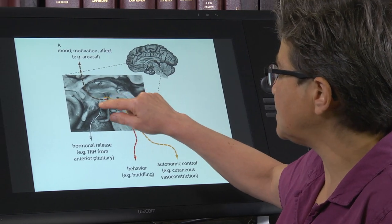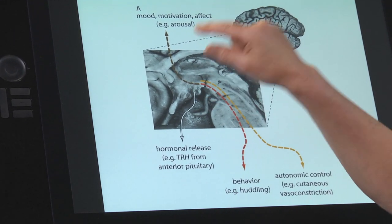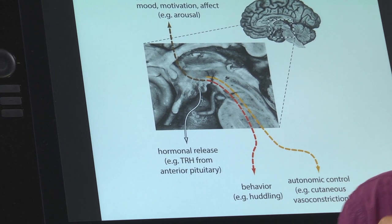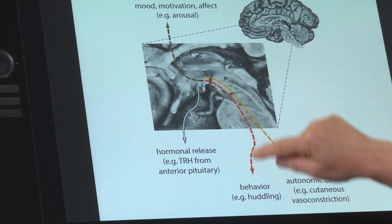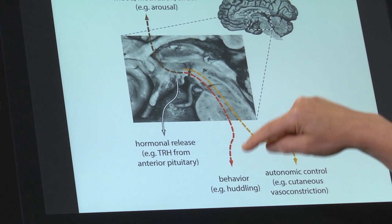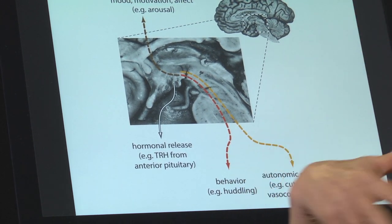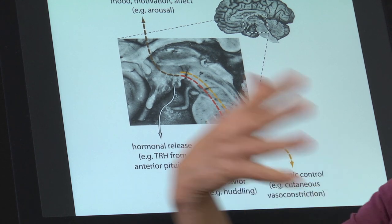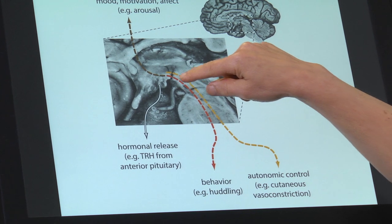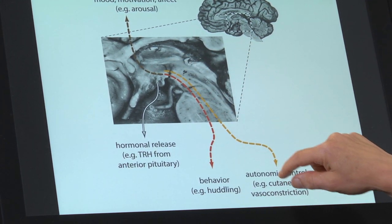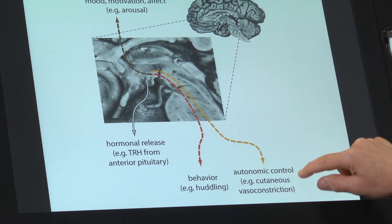That's the phylogenetically conserved purpose of the hypothalamus, but it is not the beauty of the hypothalamus. The beauty is that the hypothalamus also has connections down to the spinal cord and brainstem to motor outputs — to motor neurons or motor interneurons, neurons that then synapse themselves onto motor neurons. It also has projections into autonomic outflow areas, both parasympathetic and sympathetic.